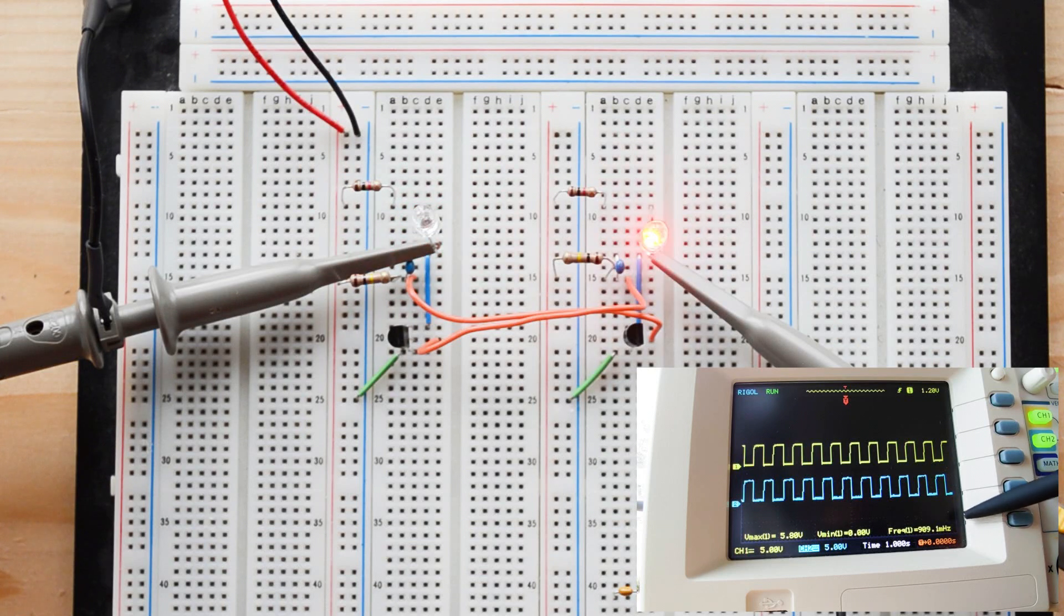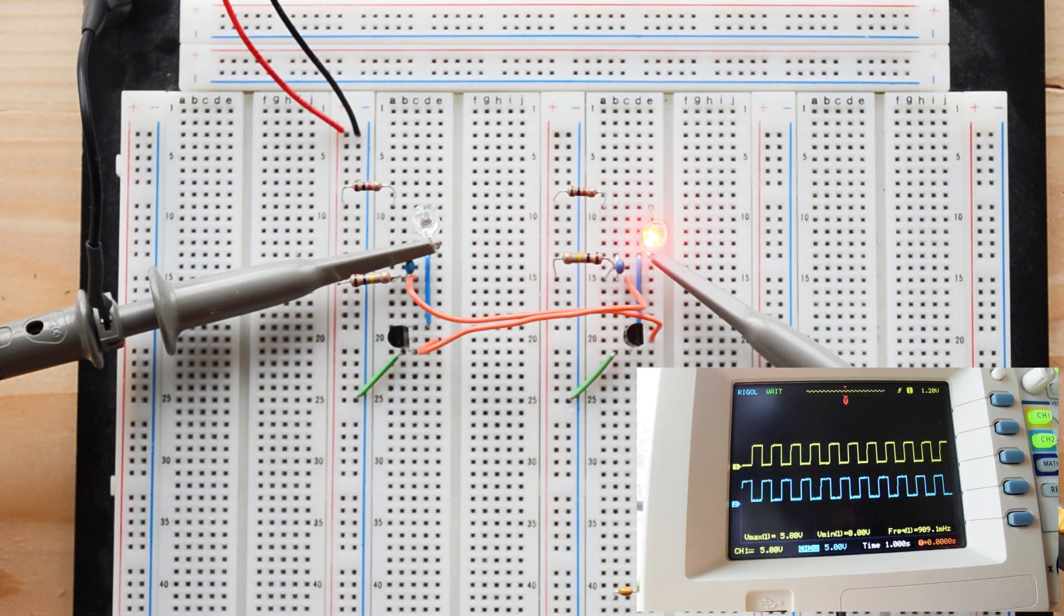You'll notice our frequency has gotten a good bit faster. We're up to almost a full hertz and things are generally doing what we expected them to do. They're starting to get quicker and faster because we have now less resistance there for R2 and R3.